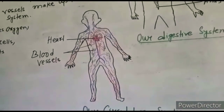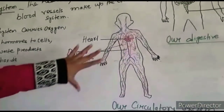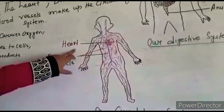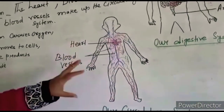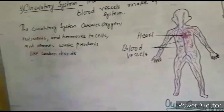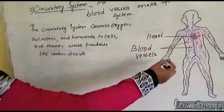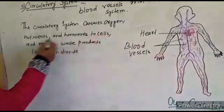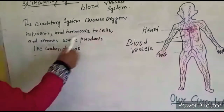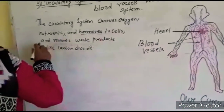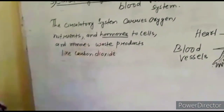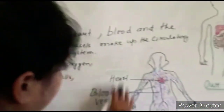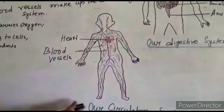In higher classes you will also learn about the different chambers of the heart, but that is not required now. Our heart beats about 60 to 100 times per minute. The circulatory system generally carries oxygen, nutrients, and hormones to cells, and it removes waste products like carbon dioxide. This is how the circulatory system works in the human body.